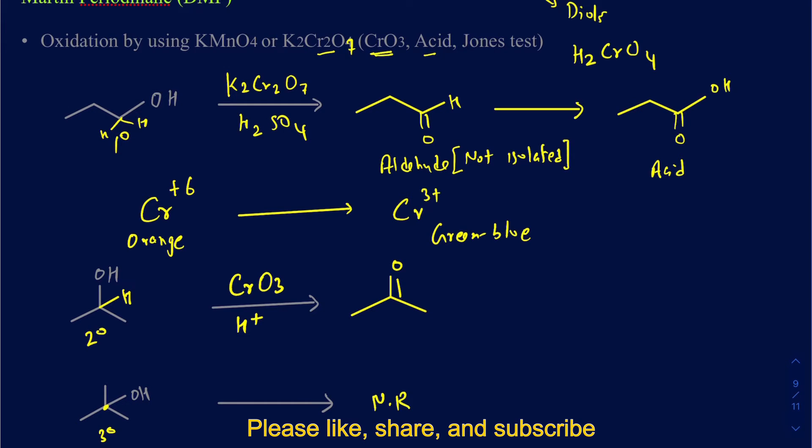Tertiary alcohols give a negative Jones test, while primary and secondary alcohols give a positive Jones test. In addition, if you have an aldehyde, it also gives a positive Jones test because it can be converted to an acid. But a ketone gives a negative Jones test because it doesn't get oxidized further.